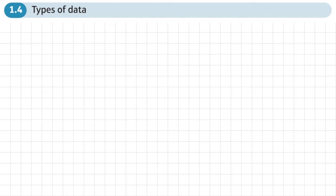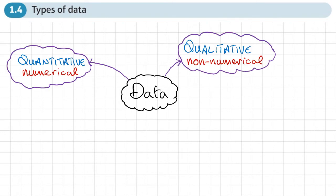This is the full section of chapter one on data collection and this section is on types of data. So let's have a look at the different types of data we can have. So our data can be split into two main groups.